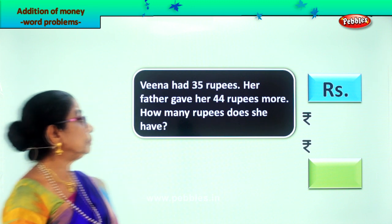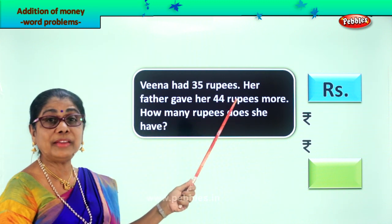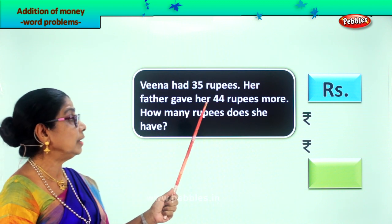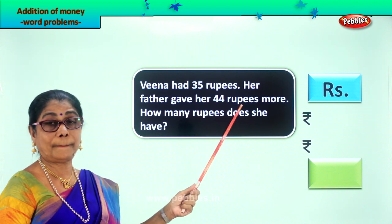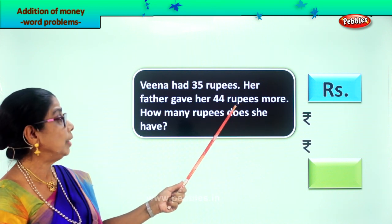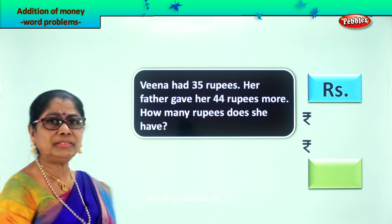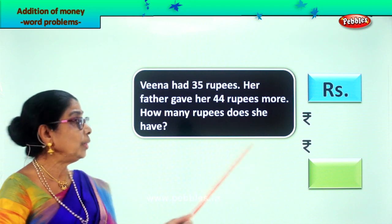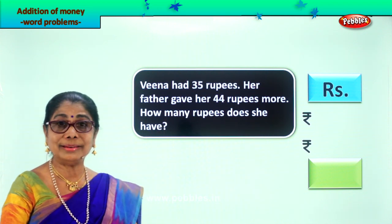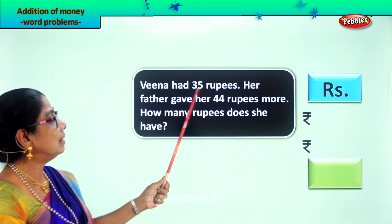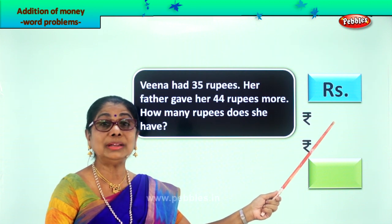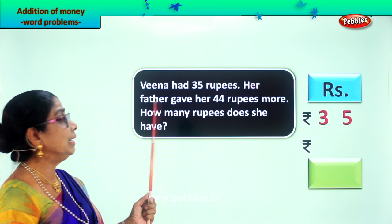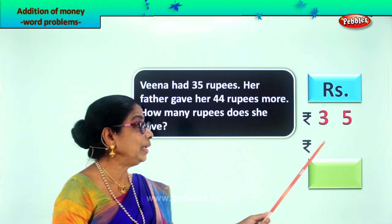Let's read aloud. Veena had 35 rupees. How many rupees did Veena have? 35 rupees. Her father gave her 44 rupees more. How many rupees does she have now? So she already had 35 rupees and her father gave her 44 rupees more. Let's write: Veena has rupees 35.